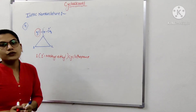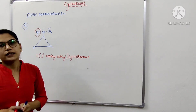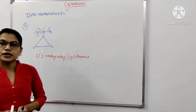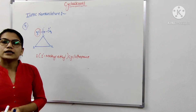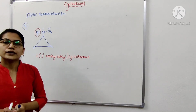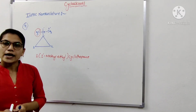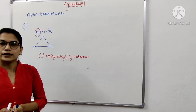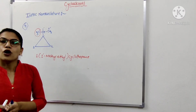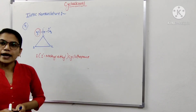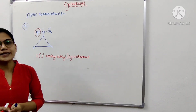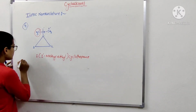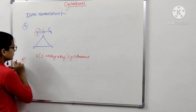The next point is: if the side chain contains a multiple bond or a functional group, the ring is treated as the substituent irrespective of the size of the ring. For example, consider the fifth example.